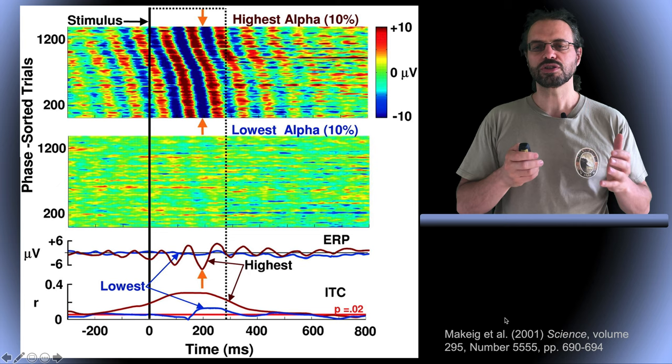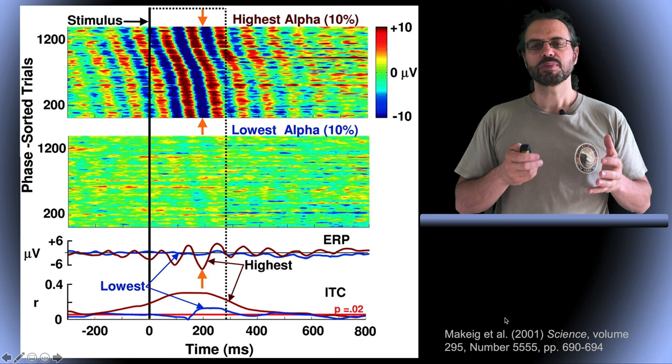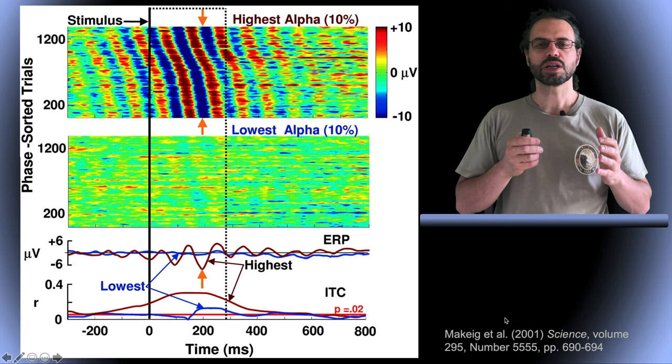What is also interesting here is the amplitude of the ITC reaching at about 0.4, so much lower than 1. Now remember that according to the true ERP hypothesis, ITC should always be close to 1.